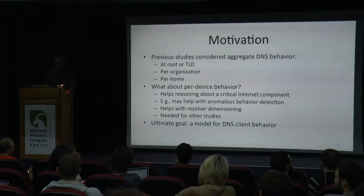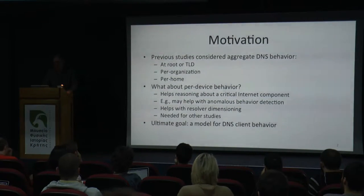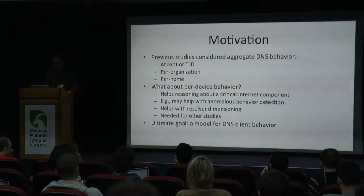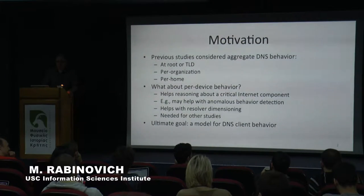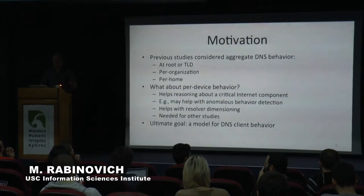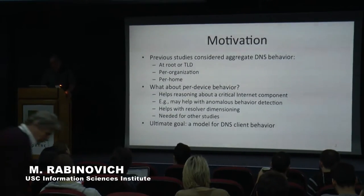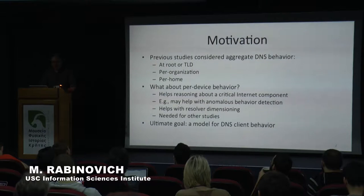If you look at the previous studies that try to characterize DNS behavior, it's usually at the aggregate level — either at the root or at a TLD, top-level domain like .com, or on a per-organizational granularity. Recently we did some work where we characterized DNS behavior at home granularity, so if you have multiple devices at home, they would all be lumped together. It's interesting to see what kind of behavior we can expect from a single user-facing device.